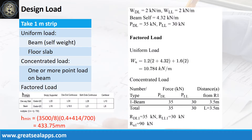The beam carries a uniform dead load of 2 kN per meter and uniform live load of 2 kN per meter. The beam's self-weight is 4.32 kN per meter, for a factored uniform load of 10.784 kN per meter. The beam also carries a concentrated dead load of 35 kN and concentrated live load of 30 kN, for a factored concentrated load of 90 kN.